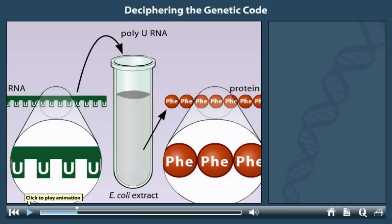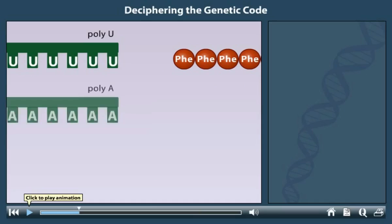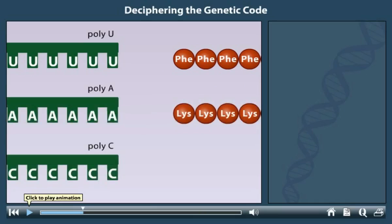In later experiments, Nirenberg and his colleagues found that a template RNA consisting of only adenine resulted in a protein made only of lysine amino acids. A poly-C RNA resulted in a protein of proline amino acids. From these experiments, it was clear that RNA was required for protein synthesis, and that the sequence of the RNA dictated the amino acids in the protein.